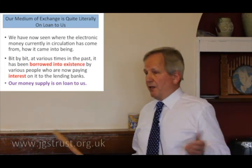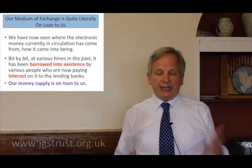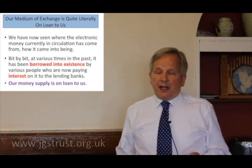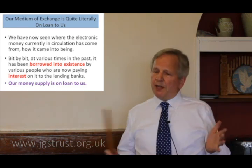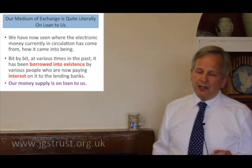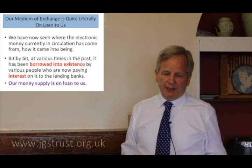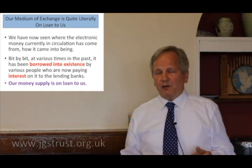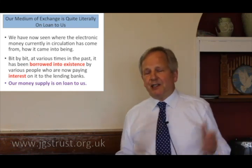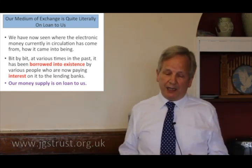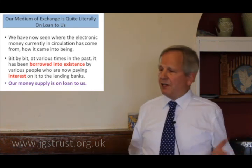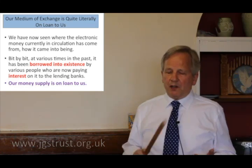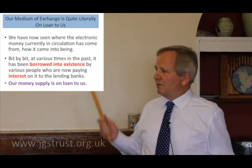So we've now seen where this electronic money comes from, how it gets into circulation, how it comes into being. Looking back, you can see that bit by bit, in the past, it's all been borrowed into existence by somebody. And these people who borrowed these digits into existence, got them into the banking system — they're paying interest on them. So every electronic pound going round and round the economy, some poor so-and-so somewhere is paying interest on it.